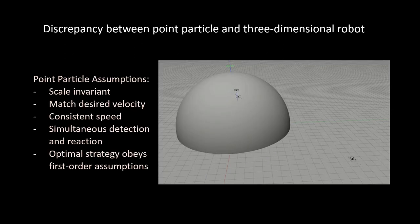With that being said, we observe any discrepancy between the performance from theory and practice and discuss how relaxing point particle assumptions would lead to the discrepancy. As shown on the right, the robot does not follow the point particle assumptions in practice.